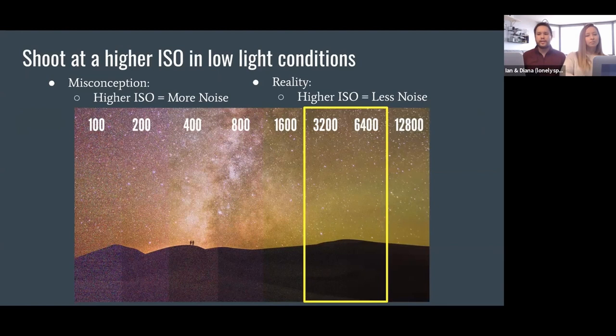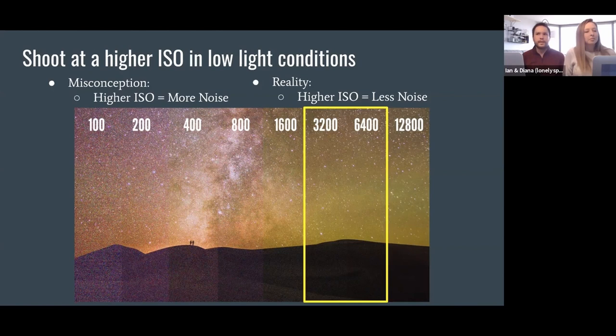So the last one is ISO, and shooting at high ISO is highly recommended. I know that you don't usually hear that in photography. Usually we want to shoot our lowest ISO, but things are a little bit different when it's very, very dark outside. And one of the common misconceptions about cameras, particularly related to low light conditions, is that if we shoot at a higher ISO, we're going to end up with more noise. But surprisingly, that actually isn't the case.